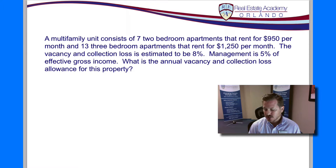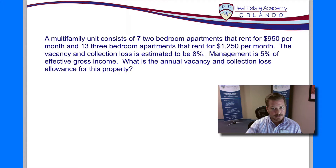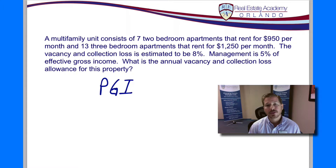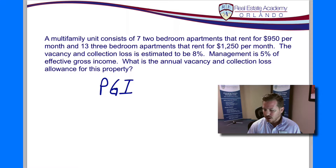Now the vacancy and collection loss — we're going to use this number to ultimately figure out what is our effective gross income. This is just a portion of a larger problem. But what we start with is our PGI, our potential gross income. This is our pie in the sky number. If every unit is rented 12 months out of the year, 365 days, everybody pays on time and no vacancies — how much money would the property bring in in a year? That would be our potential gross income. So we know that the vacancy and collection loss is going to be 8% of that.